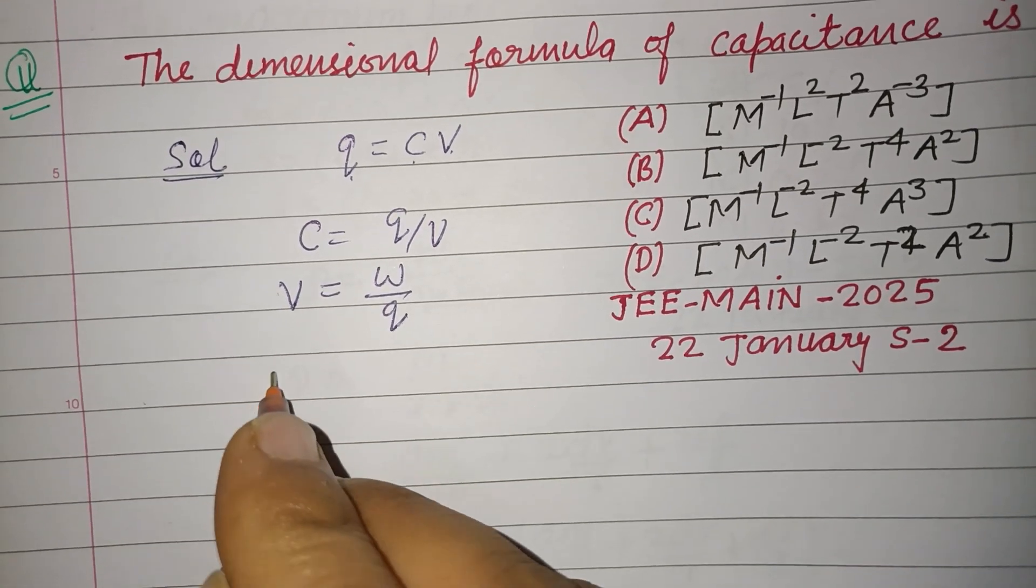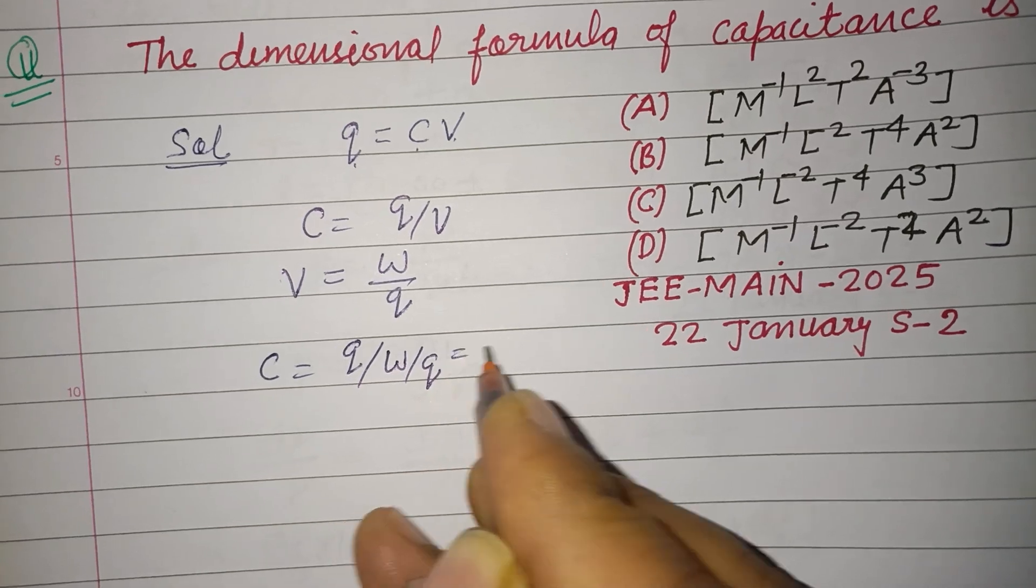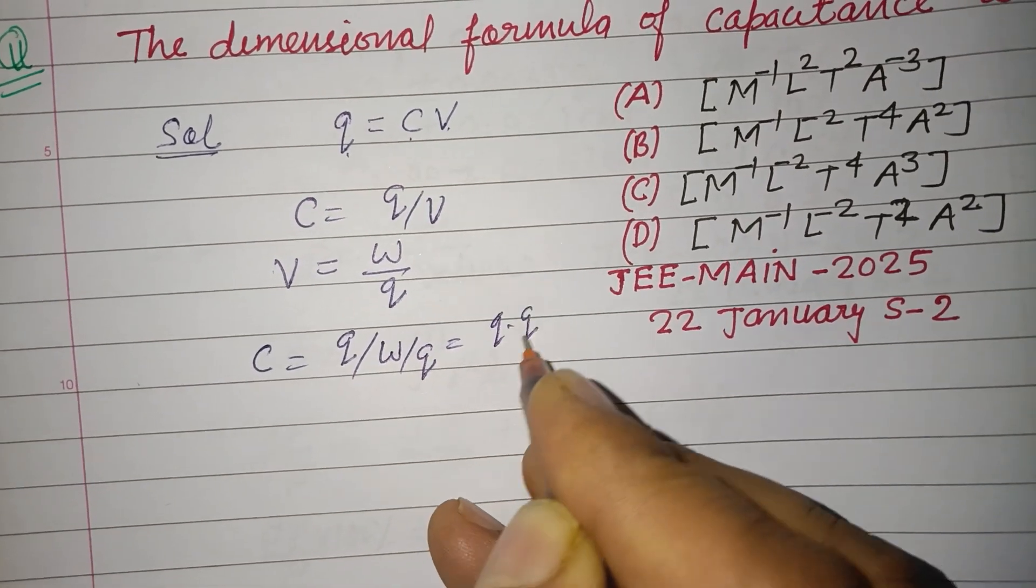So putting this value here, C equals q over W upon q, so this is q times q over W, that is q squared over W.